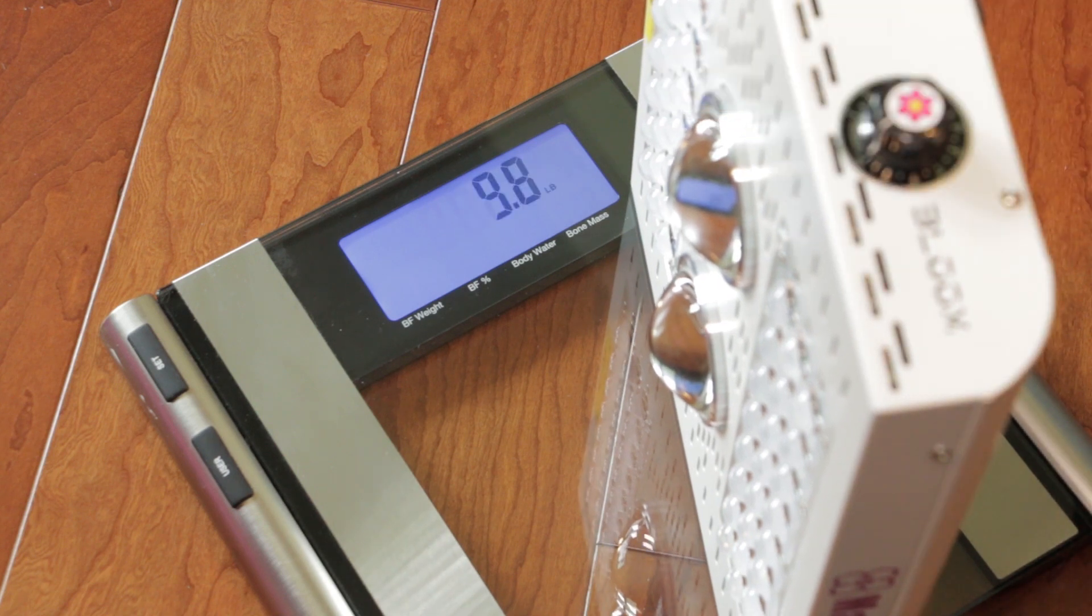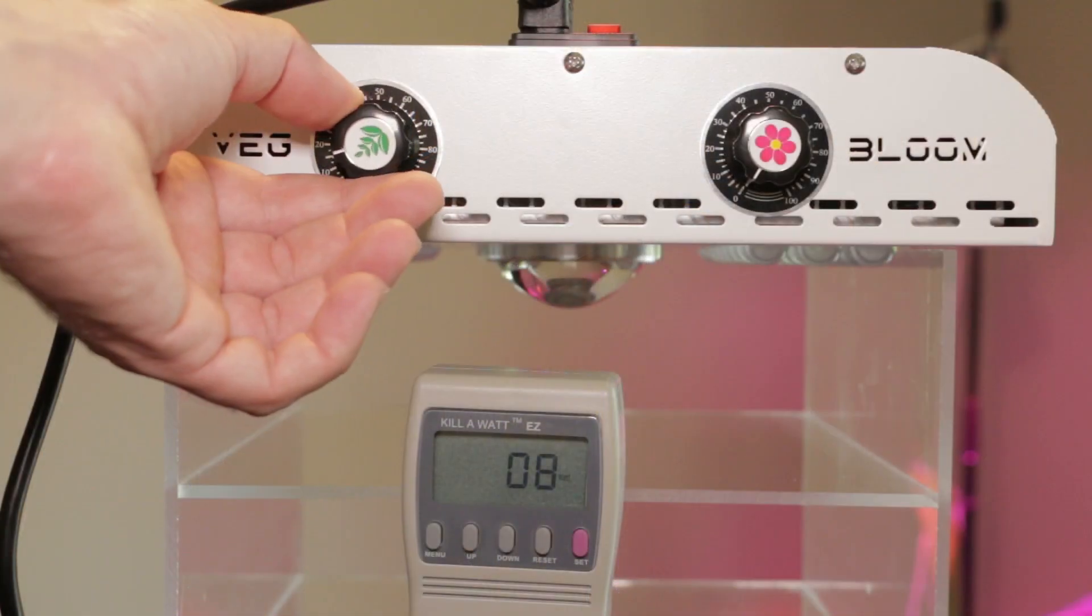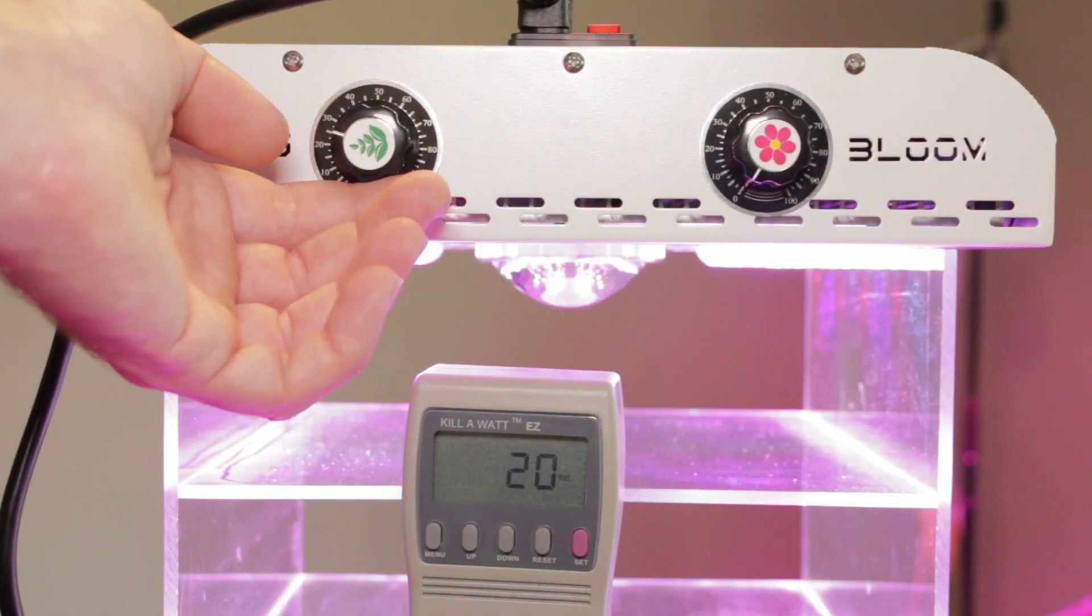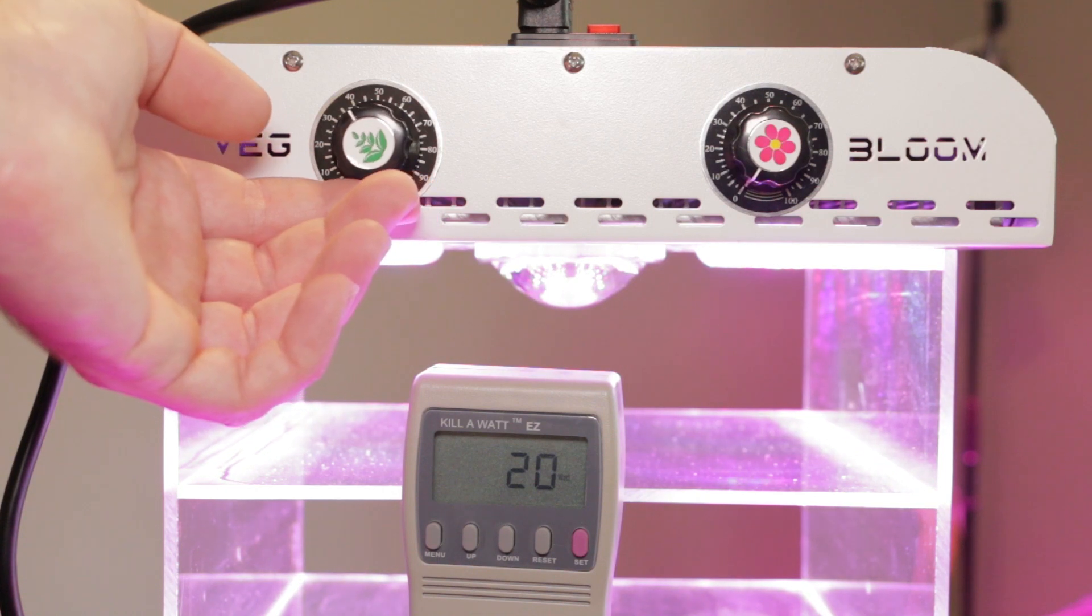The dimmer switches are very smooth and are clearly marked with output percentages. Here you can see the wattage consumption as both dimmers are increased to max output.